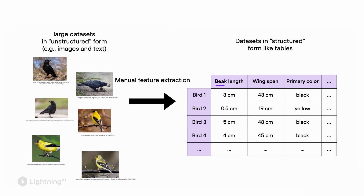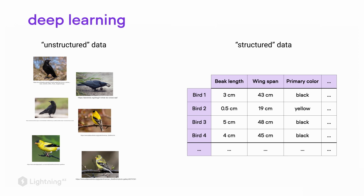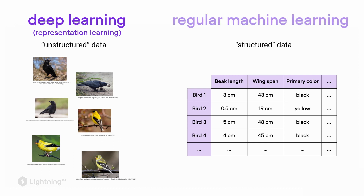For example, someone measured the beak length of the birds, or the wingspan, and wrote down the color of the different birds. Both are different ways we can input data to a machine learning system. The unstructured dataset on the left is something deep learning is particularly good at — that's also why it's sometimes called representation learning — it can make sense of more raw or unstructured forms of data. However, if we have a dataset where we've already extracted feature information, as on the right-hand side, that's usually a use case for regular or conventional machine learning.